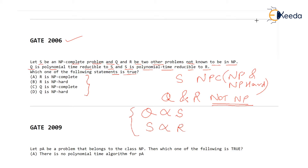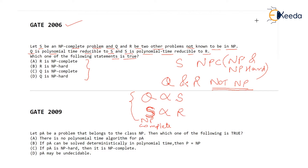S is NP complete, and this problem S is reducible to R. Since S is NP complete, it is definitely NP hard. Now, if any NP hard problem is reducible to some other problem like R, then R is definitely NP hard. That is our first conclusion. S is NP hard — it is given clearly because it is NP complete — so S is reducible to R means R is definitely NP hard.